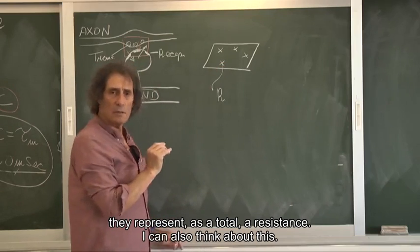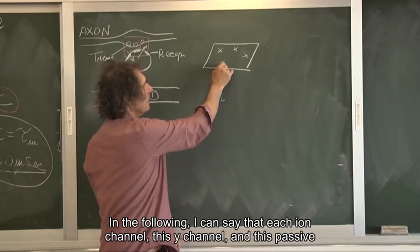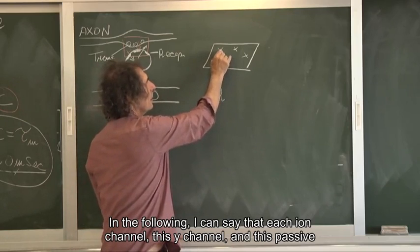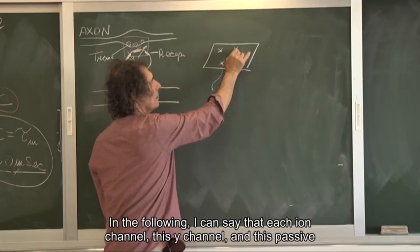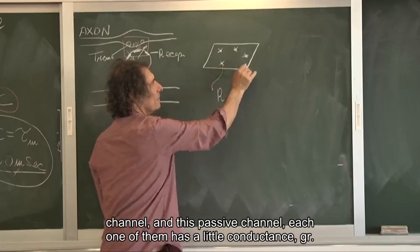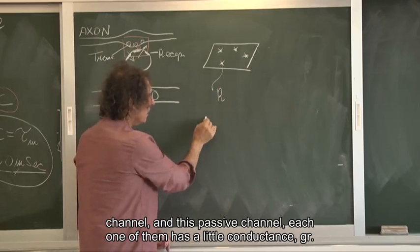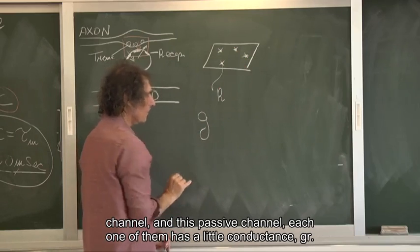I can also think about this in the following. I can say that each ion channel, this white channel, and this passive channel, and this passive channel, each one of them has a little conductance, GR.